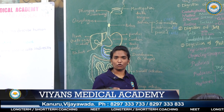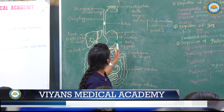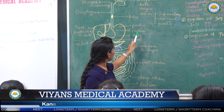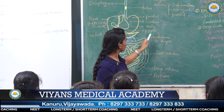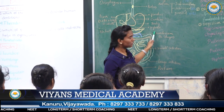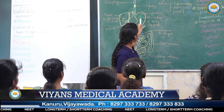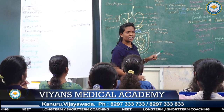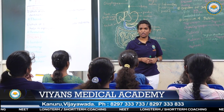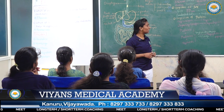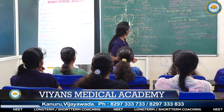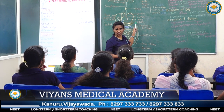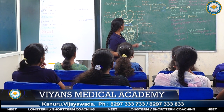The stomach is divided into 4 parts: fundus, cardia, body, and pylorus. In the stomach, 80 to 90% of food is digested, and most of the proteins are digested in the stomach.